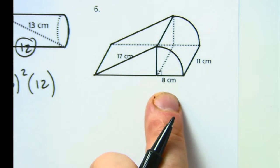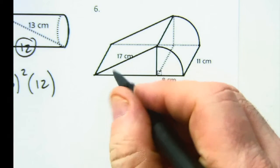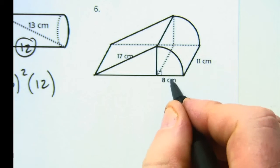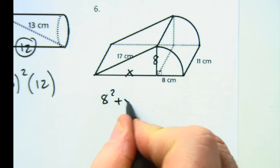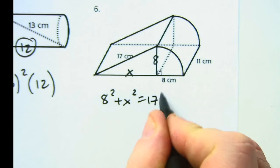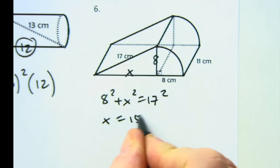All right, I like this one. I'm going to do it in a cool way. So this is 8, this is 8. You're missing this, so that's 8 squared plus x squared equals 17 squared. You're going to find out that that's a 15 here.